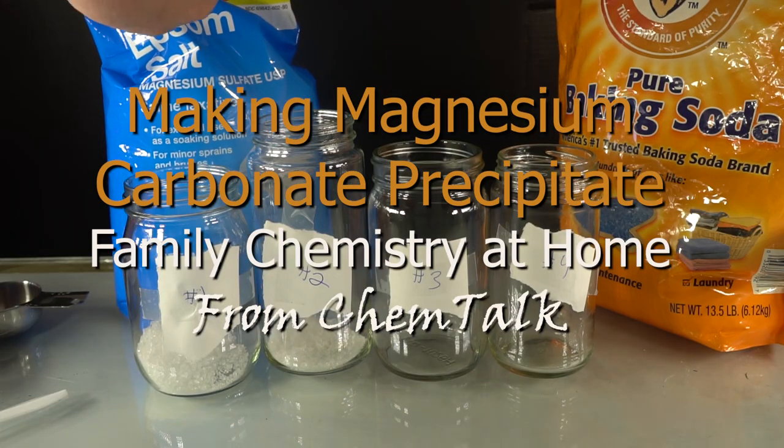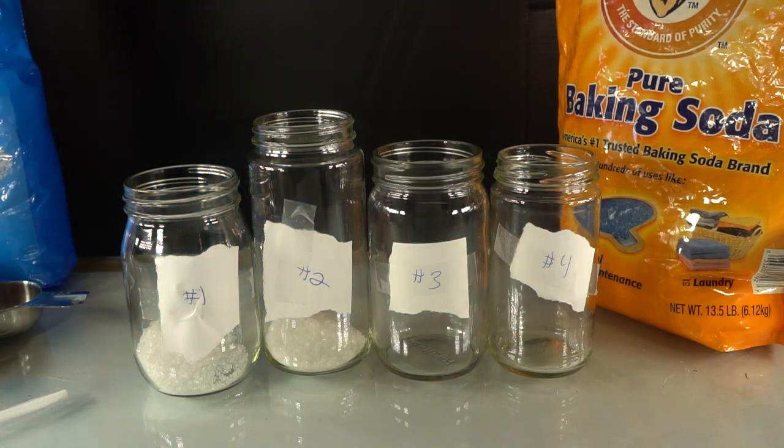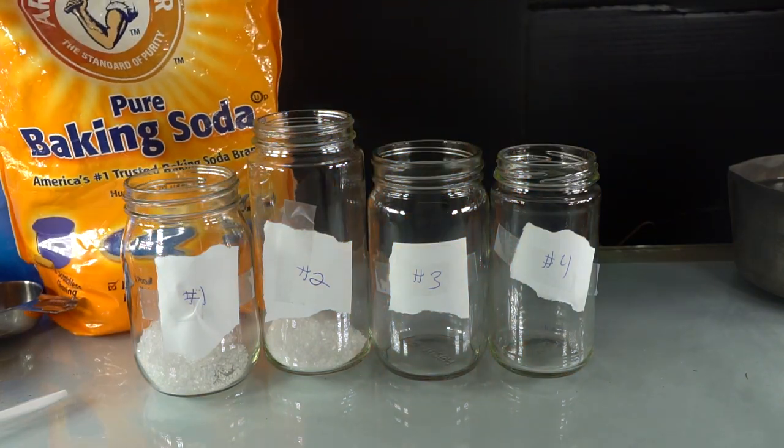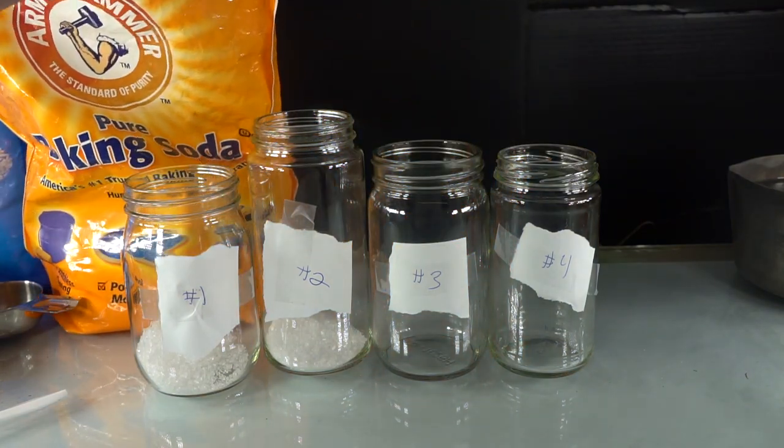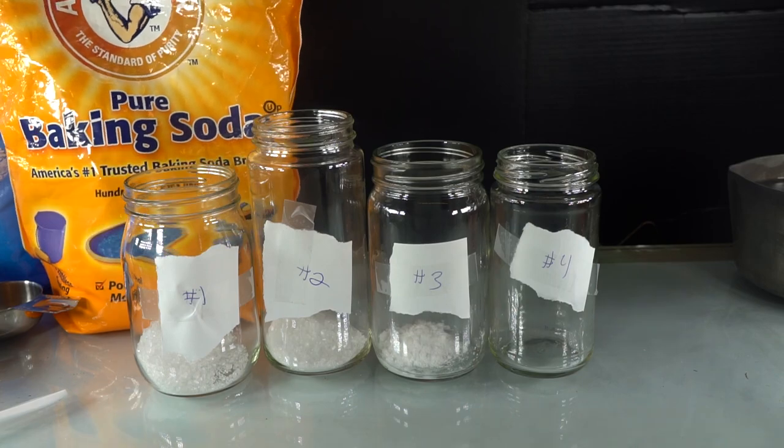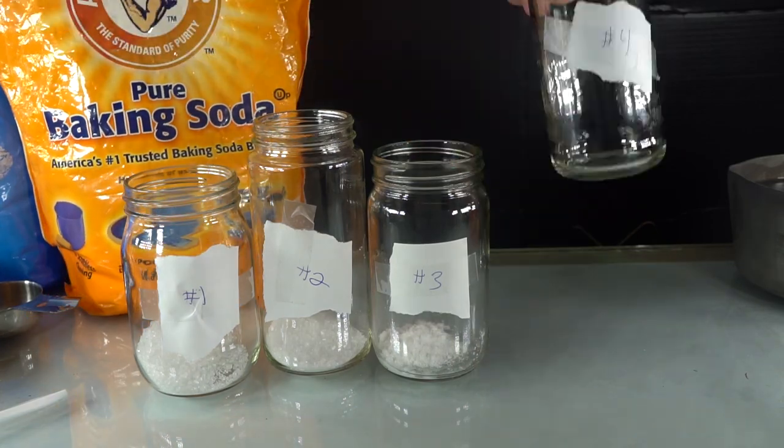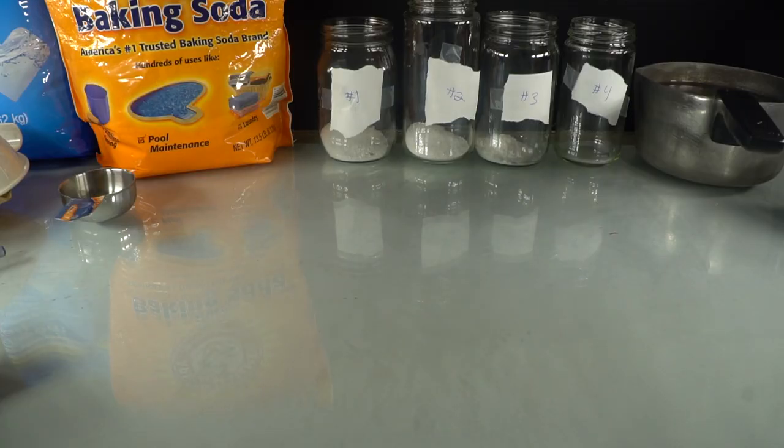Hello, this is Scott from ChemTalk, chemistrytalk.org. There are not enough experiments at home that kids can do that are safe and easy. The ones you see usually involve mixing baking soda and vinegar. Kids want something new.